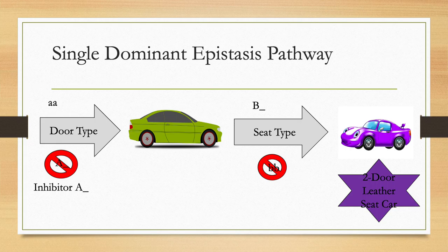What I've described is single dominant epistasis. When a single gene, in our example four-door cars, acts as a repressor that prevents the next step on the pathway to a car.